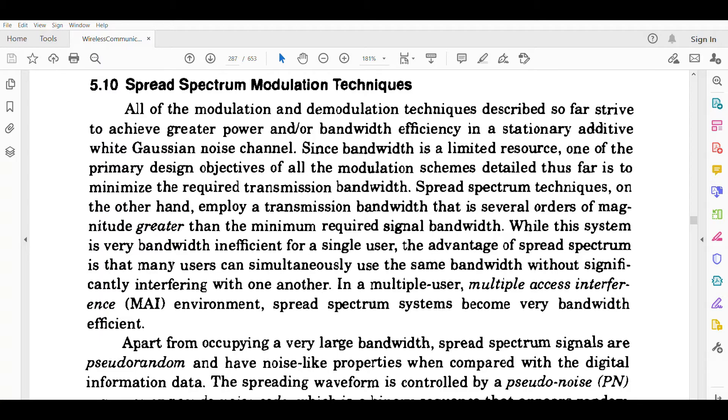While the system is very bandwidth inefficient for a single user, the advantage of spread spectrum is that many users can simultaneously use the same bandwidth without significantly interfering with one another. In a multiple user, multiple access interference environment, spread spectrum systems become very bandwidth efficient.